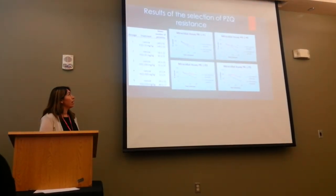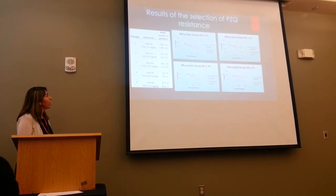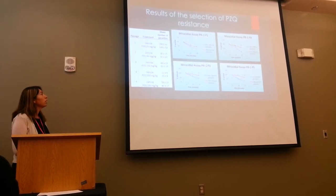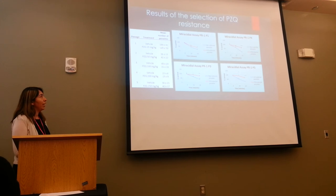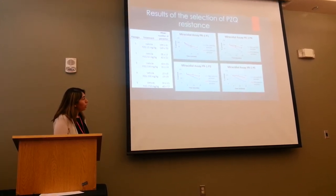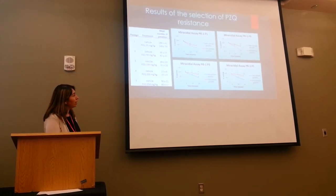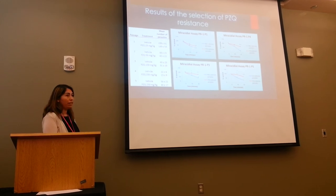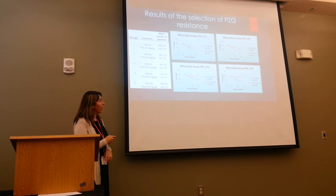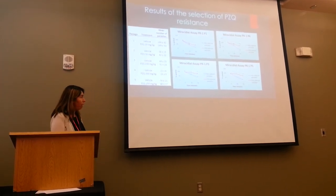These are the results of the selection for praziquantel resistance. The graph shows passage 1 through 5, the treatment given — either vehicle or praziquantel — and the mean number of parasites taken from each group. In the red we have the selected group, and in the blue the non-selected group. As time goes on, the gap is widening, and we're seeing more of the selected group surviving than the non-selected group.